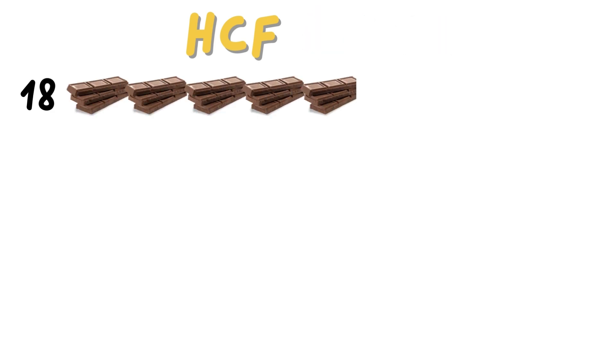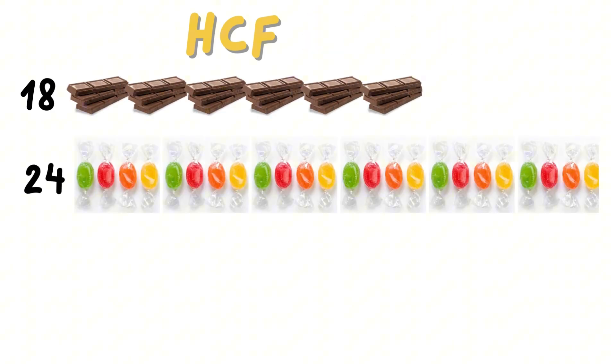We actually use highest common factor and the lowest common multiple a lot in real life. Here is one example. Mariam buys 18 chocolates and 24 sweets. She wants to make identical goodie bags with no leftovers. What's the maximum number of goodie bags she can make?